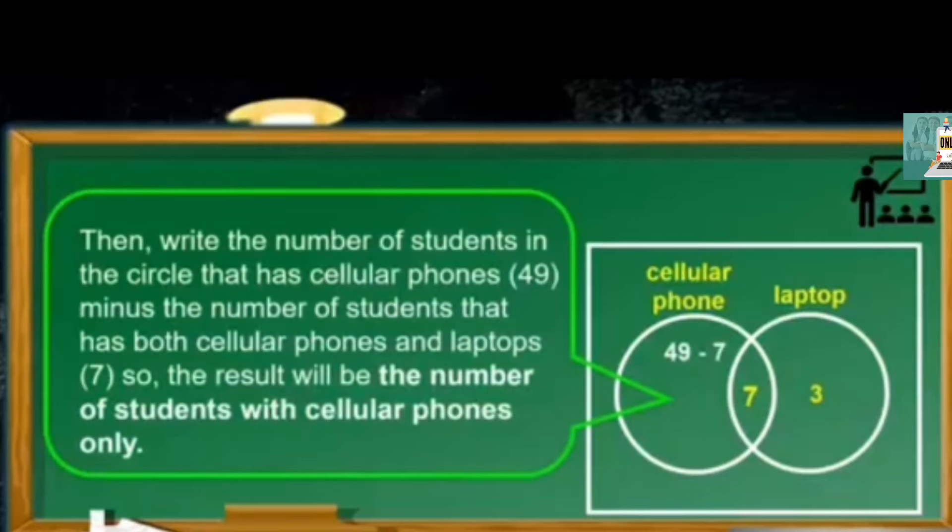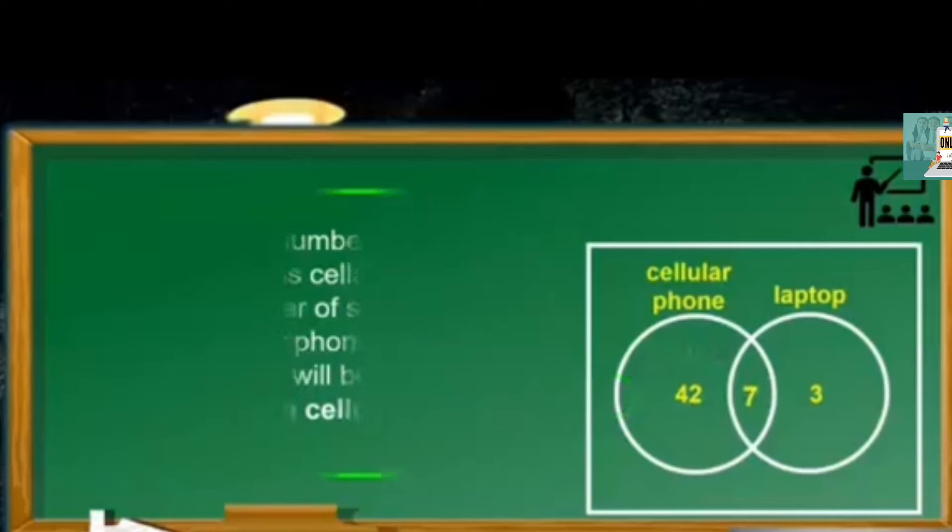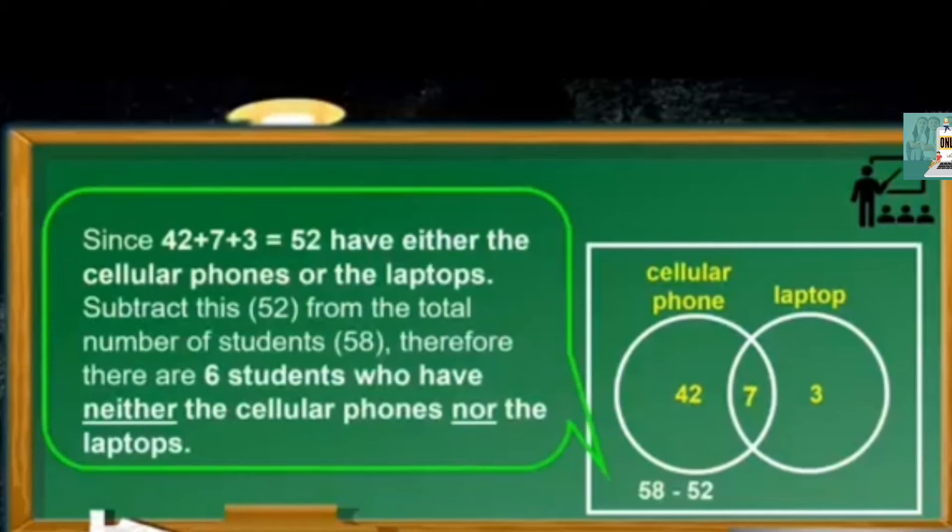Do the same thing with the cellular phone. 49, the number of students in the circle that has cellular phones, minus the number of students that has both cellular phones and laptops. So 49 minus 7 is 42, the number of students with cellular phones only. Since 42 plus 7 plus 3 is equal to 52, have either the cellular phones or the laptops, subtract this 52 from the total number of students, which is 58. Therefore, there are 6 students who have neither the cell phones nor the laptops. So we write it inside the box, outside the two circles. That is 6.